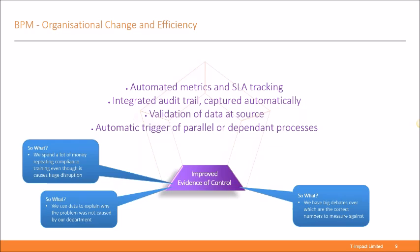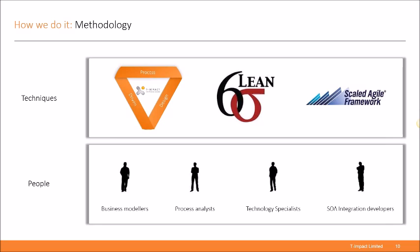So those are the benefits of implementing a BPM solution — but how is it done? At T-Impact, we have devised a unique process-driven design approach to scale agile deployment, which incorporates lean Six Sigma techniques. We analyse our clients' businesses, design improvements, and quantify the benefits this will deliver. We combine this with an agile and iterative delivery approach which reduces the risk of failure, particularly the most prevalent risk: change resistance — when staff don't want to change, don't see the need, or are scared of what change means for them. Our teams are typically comprised of business modelers, process analysts, technology specialists, and SOA integration developers who work in small teams to deliver maximum benefit in a short space of time.